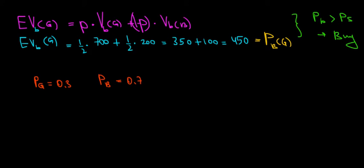So what would be the expected value of getting a laptop for the buyer in this case? That's what we're looking at. Well, we take into account that with 30% probability he might get a good laptop, so he would be willing to pay what he values for the good laptop, which is 700 euros. Plus the remaining probability he might get a bad laptop, for which he would be willing to pay 200 euros.